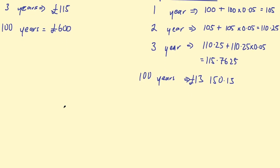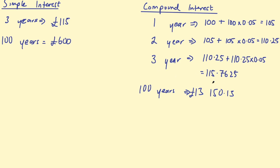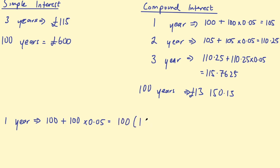So let's go ahead and derive the formula for compound interest, starting with this example again. After one year, looking at 100 plus 100 times 0.05, we can factorise out a 100 to get 100 multiplied by (1 + 0.05), giving £105. Hopefully you can see how I'm factorising that.